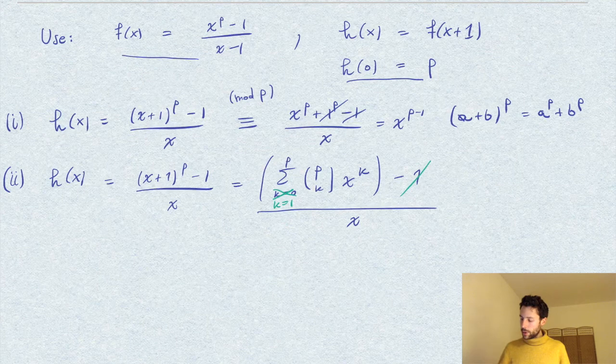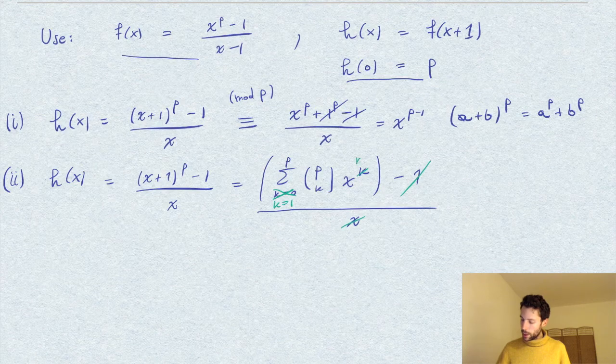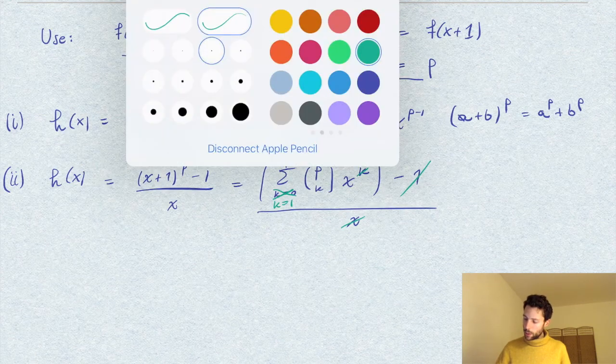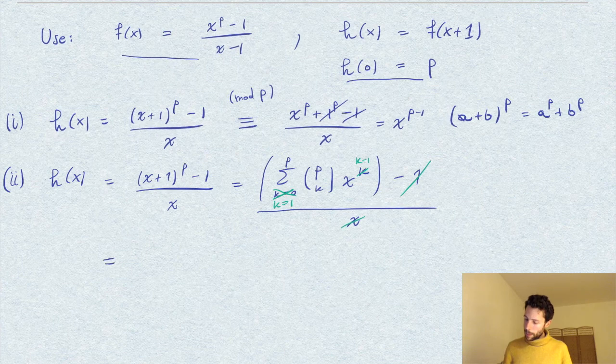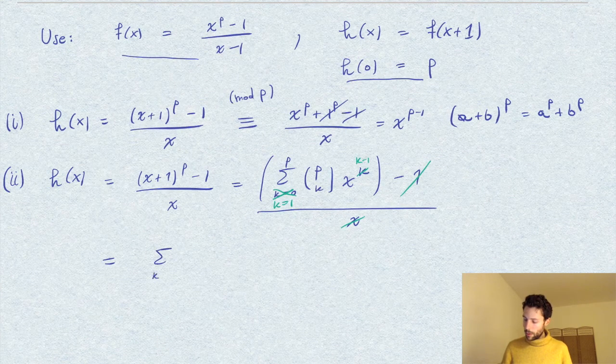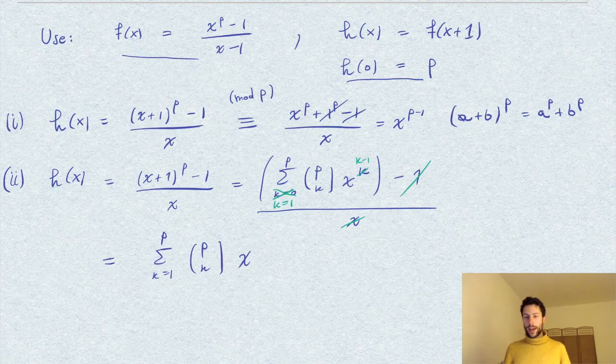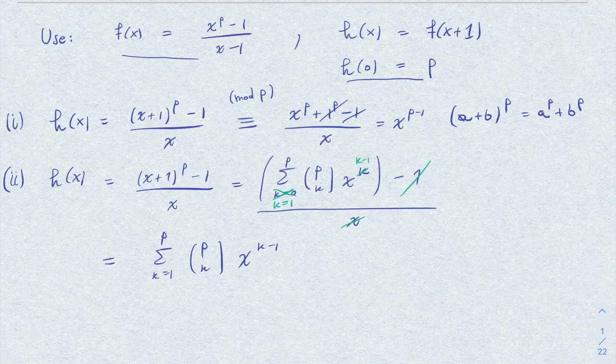And therefore I can simplify x here with k minus one. In other words, let me rewrite this as the sum from k equals 1 to p of p choose k times x to the power k minus 1.